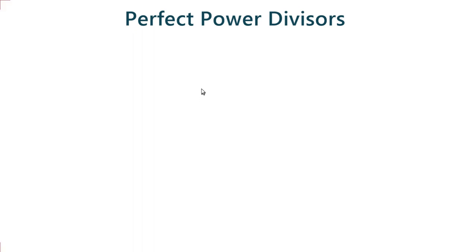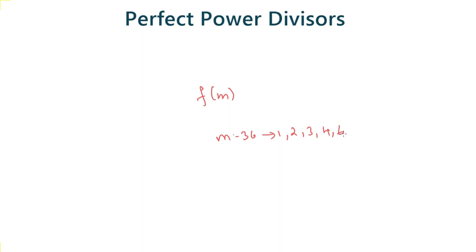In this problem, f is the sum of all perfect powers which divide m. So say m is equal to 36. The factors of 36 are 1, 2, 3, 4, 6, 9, 12, 18, and 36.